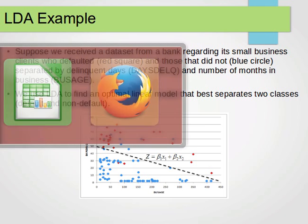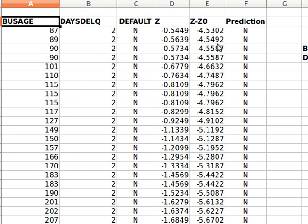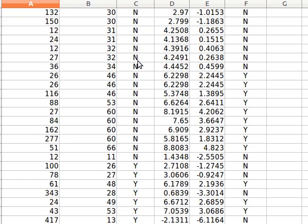Now the data looks like this, provided by Professor Saed. Don't worry about these calculations. The data originally has only three columns: BUSAGE, DAYSDELQ, and default. These are the two variables or predictors, and default is the class, either no or yes.